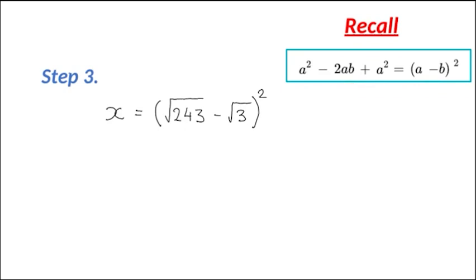So let's apply it now to the internal term. We're going to get the square root of 243 all squared—that's the a squared—minus 2 by square root 243, that's the a, multiplied by square root of 3, plus square root of 3 all squared.